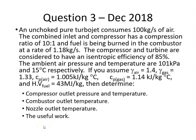In this question we're asked to calculate the compressor outlet pressure and temperature, the combustor outlet temperature, and the nozzle outlet temperature, and useful work for an unchoked pure turbojet that consumes 100 kilograms per second of air. The compressor has a compression ratio of 10 to 1 and fuel is burned in the combustor at a rate of 1.18 kilograms per second. The compressor and turbine have an isentropic efficiency of 85%, and we're given the ambient air temperature and some other assumptions.